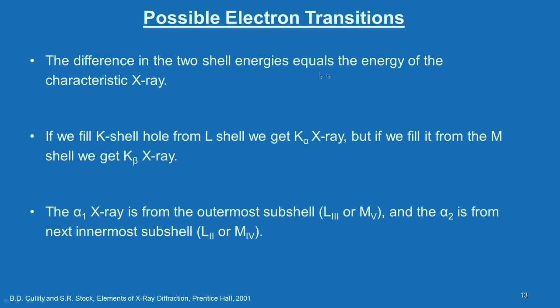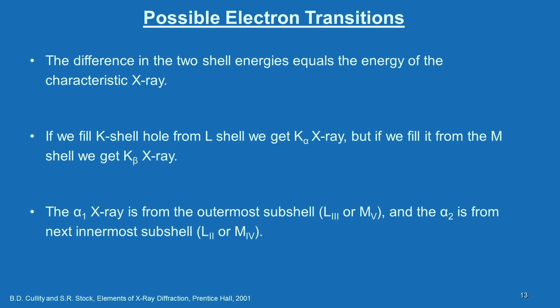If a K shell hole is filled from an L shell, we get Kα X-ray; if filled from the M shell, we get Kβ X-ray. The Kα1 X-ray comes from the outermost shell (L3 or M5) and Kα2 from the next inner shell (L2 or M4). The difference between two shell energies equals the energy of the characteristic X-ray, and from this the λ is calculated.